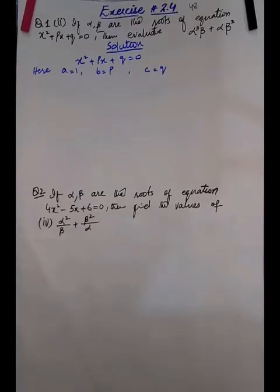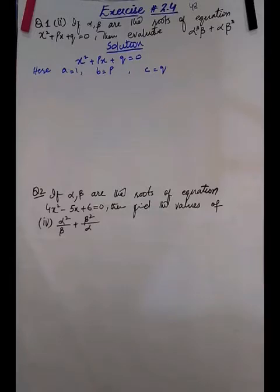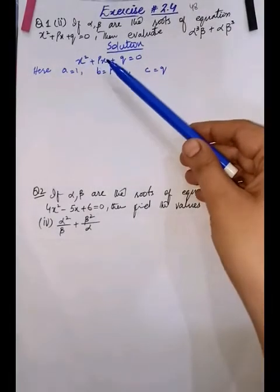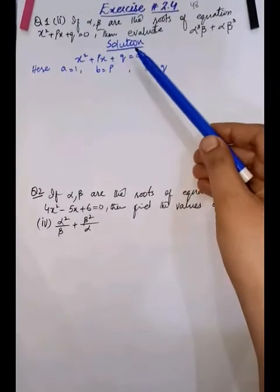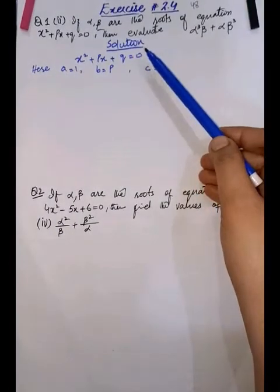What is given to us? If alpha and beta are the roots of the equation x² + bx + q = 0, then evaluate α³β + α³β + αβ³. We are given an equation x² + bx + q = 0.